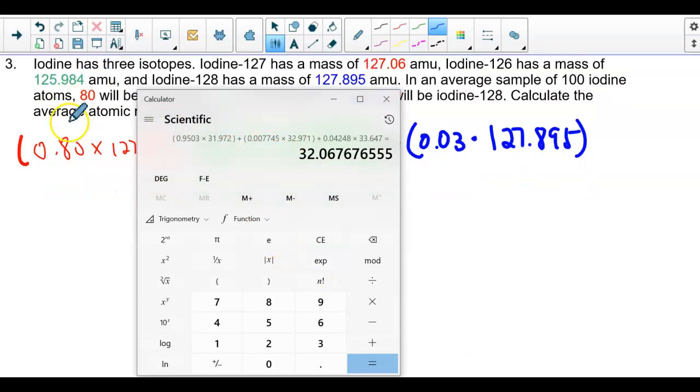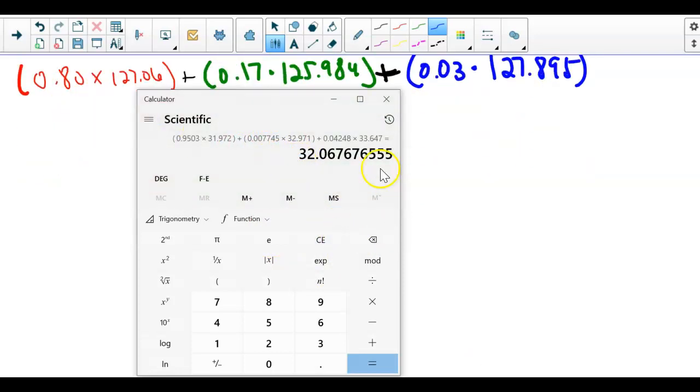Now let's punch that in the calculator. We're going to do parentheses, 0.80 times 127.06, close parentheses, plus open parentheses, 0.17 times 125.984, close parentheses, plus open parentheses, 0.03 times 127.895, close parentheses, hit equals, and I get 126.90213.